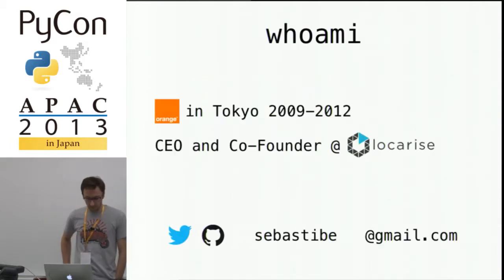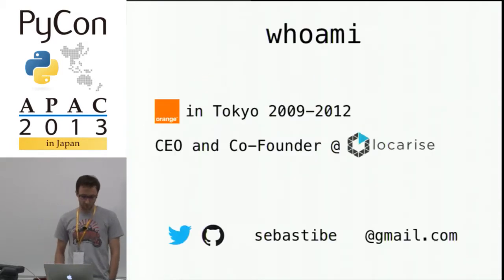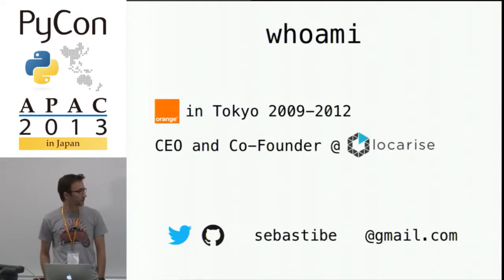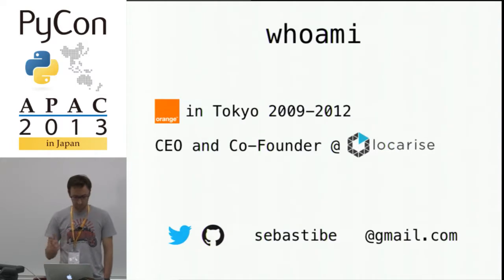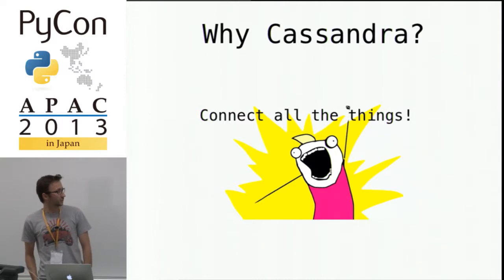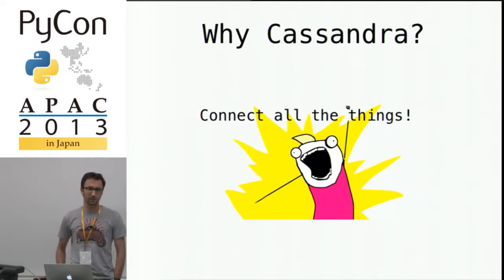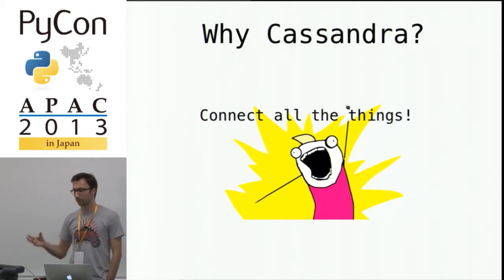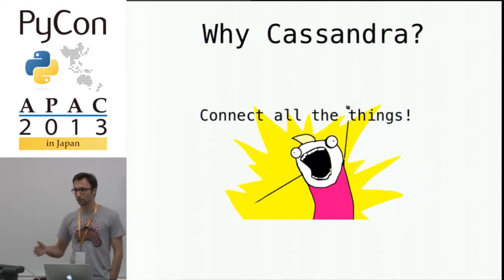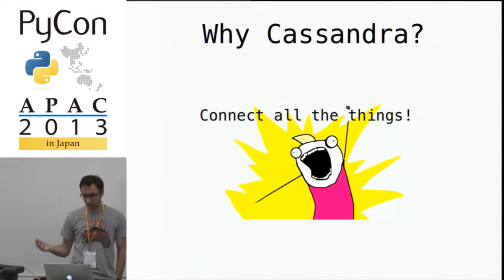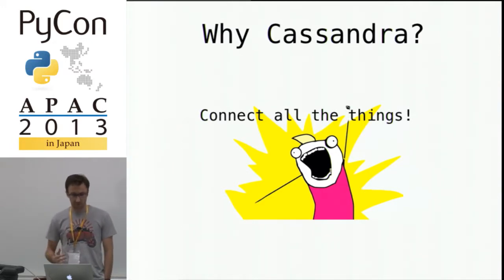I've been working in Tokyo for the last four years, first for a company and now for my own companies, basically doing the same things. I've been working with Cassandra for roughly the last three years. Why Cassandra? Because we've been connecting more and more things to the internet — sensors, temperature sensors, gateways, phones — and in each of these cases we needed to log everything.